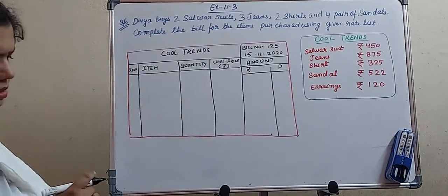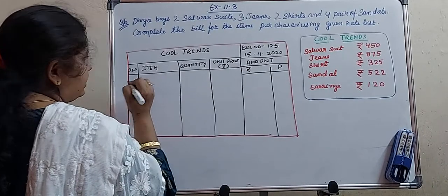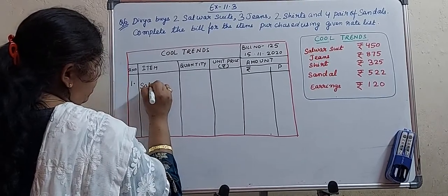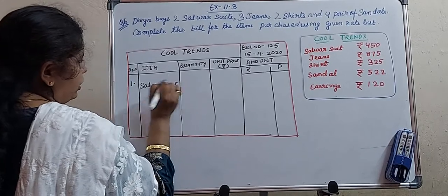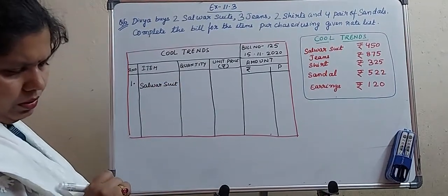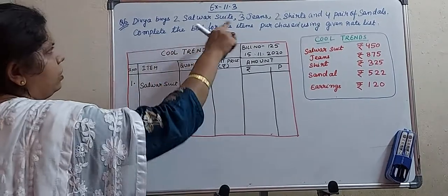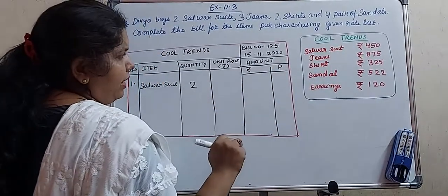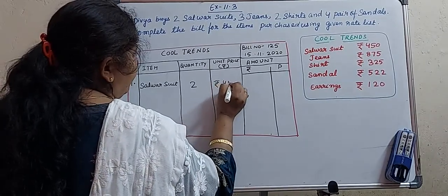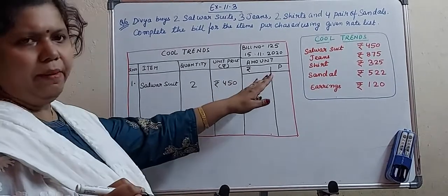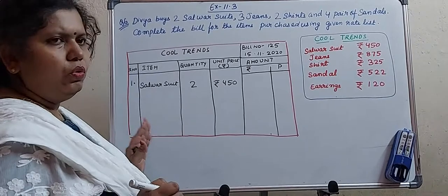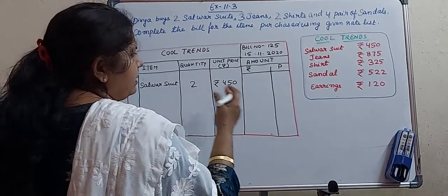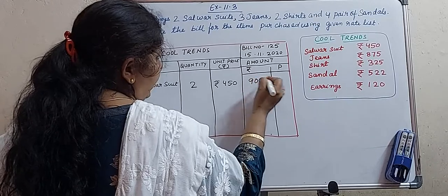The first item purchased by Divya is salwar suit. She is buying 2 salwar suits, as given in the question. The cost of one salwar suit is ₹450, as given in the rate list. So we write ₹450 here. The amount is quantity multiplied by unit price: ₹450 × 2 = ₹900. Under paise, write 00.